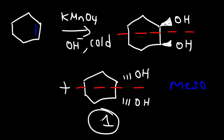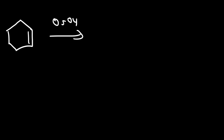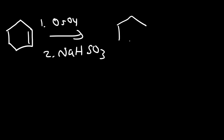Another reagent that can do the same thing is OsO₄, followed by, in the second step, sodium bisulfite. This will lead to the same product — the cis-1,2-diol.